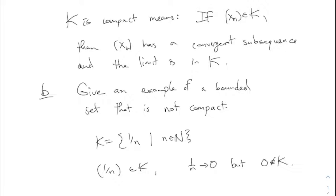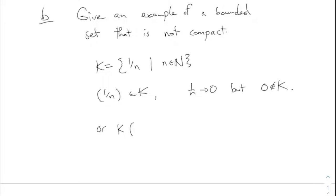What about negative 1 to the n? As a set, that's just {-1, 1}, which is compact — any sequence of those has a convergent subsequence by choosing all the positives or whatever. Another natural answer would be the open interval (0,1). You can find a sequence in here which converges to 0, or a sequence that converges to 1, but neither endpoint is part of the set.